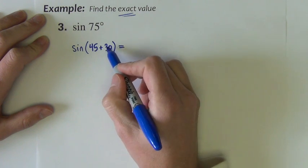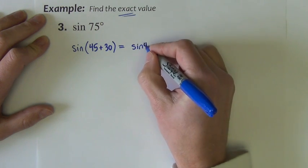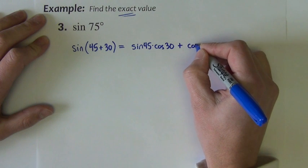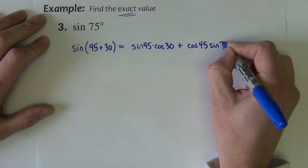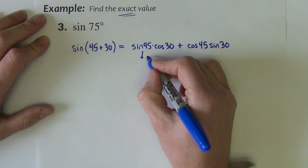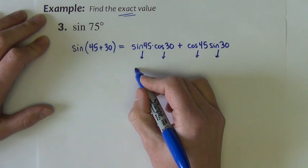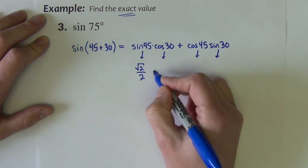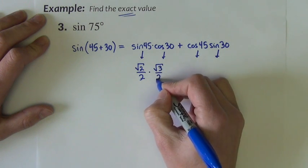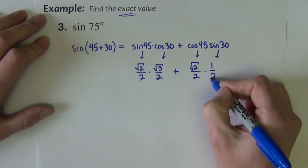And I'm going to use the sum and difference identity to rewrite this. The 45 is the u, 30 is the v in the formula. So this will expand to look like sine 45, cosine 30, plus cosine 45, sine 30. Now, each of these four trig function values has an exact value, which we're going to look at from the unit circle. Sine of 45, square root of 2 over 2, cosine of 30, square root of 3 over 2, plus cosine 45, square root of 2 over 2.